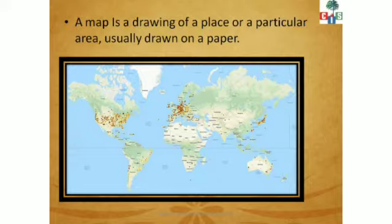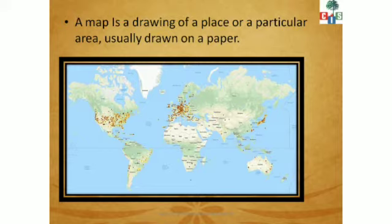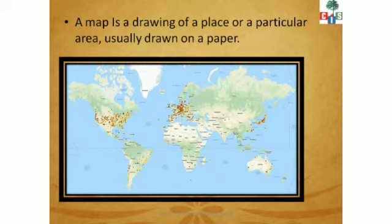What is a map? If it is asked in an exam, here is the definition: A map is a drawing of a place or a particular area, and it is usually drawn on paper — flat paper. Remember, it can also be a one-mark question. So the definition is: a map is a drawing of a place or particular area, usually drawn on paper.